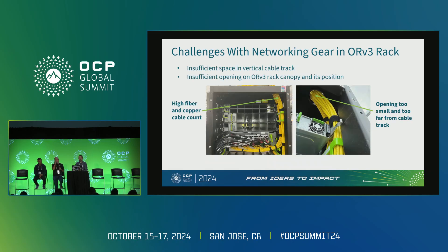The second challenge is cabling. The first version of ORV3 had the same canopy cutouts as ORV2 — this was at a time when compute had a smattering of cables coming from outside the rack, maybe eight LC duplex fibers and a handful of CAT6 or CAT5 cables for console management. But for network, we're talking up to over 2,000 fibers coming into this rack. So we knew this wasn't going to scale — the canopy cutout was too far over and too small. That's going to need to be addressed in order to accommodate network.